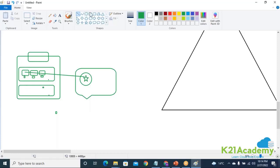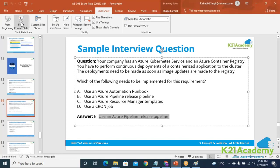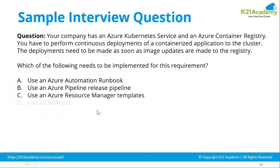For any deployment you will be using, your Azure release pipeline and CI/CD pipelines will come into the picture. Cron jobs are used to schedule tasks. Azure Runbooks can be used, but if a pipeline is not there, how will you be able to put that code on that particular Kubernetes cluster? So the answer is B — your release pipeline. DevOps understanding is required for this question.